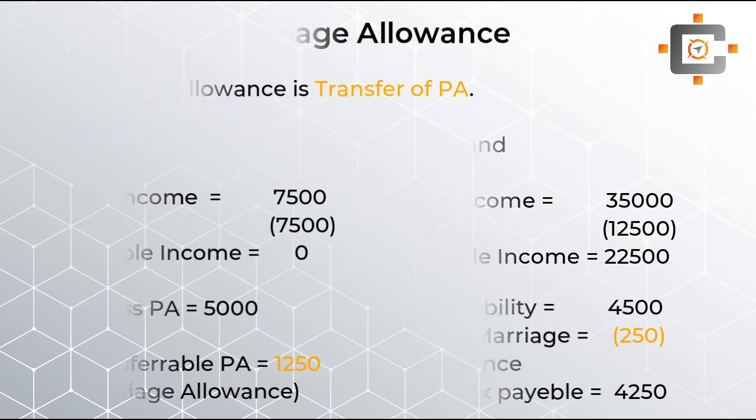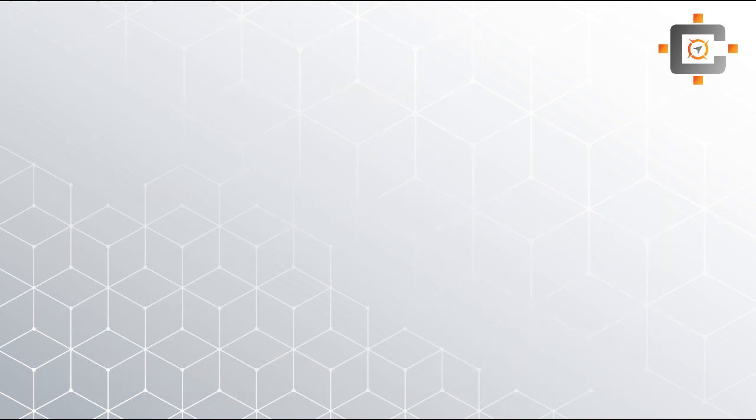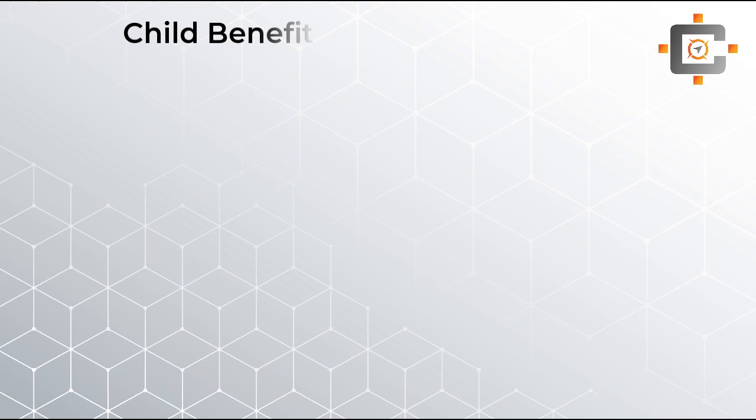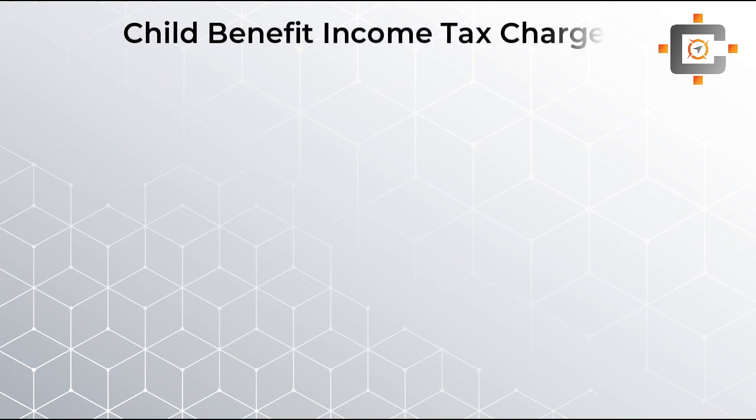The husband will get a 20% tax benefit, that is £250 as a tax reduction. We apply 20% because to claim the marriage allowance, both parties — husband and wife — have to be basic rate taxpayers. If any of the parties is not a basic rate taxpayer, then the marriage allowance is not possible. Now let's come to the next concept, which is the child benefit income tax charge.